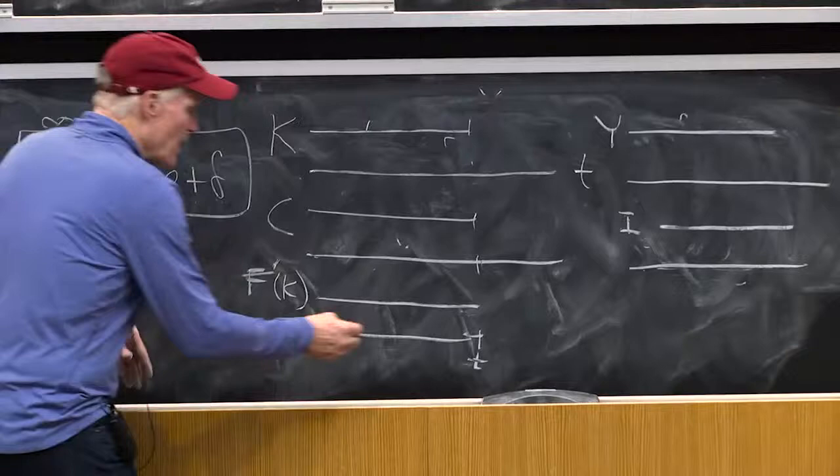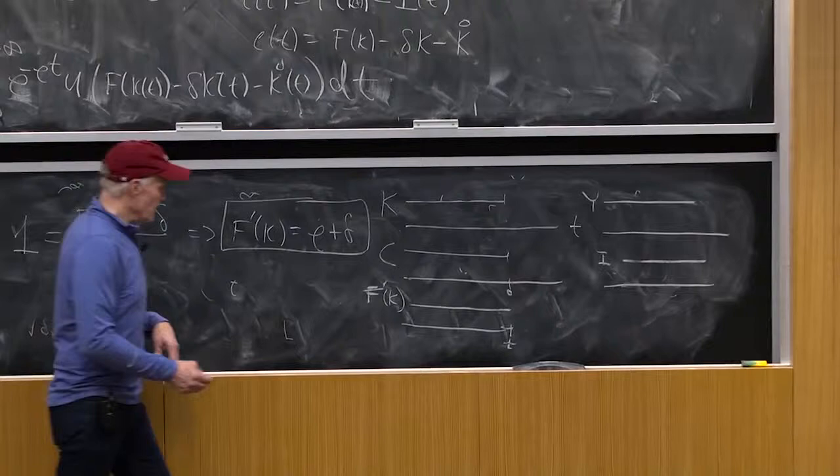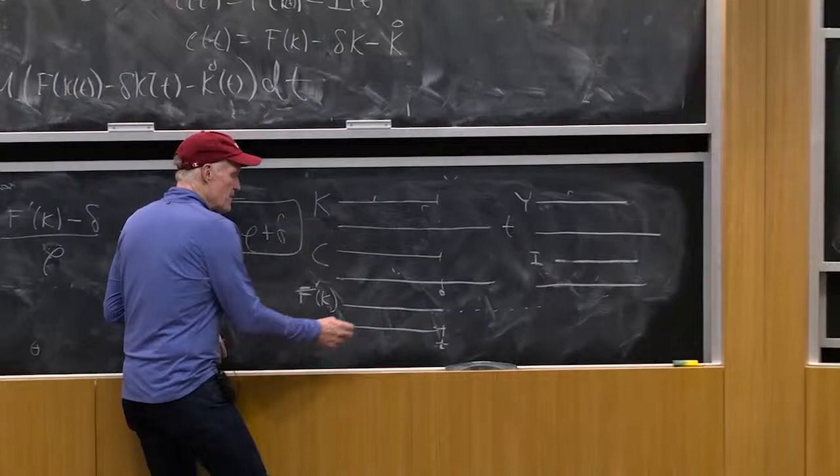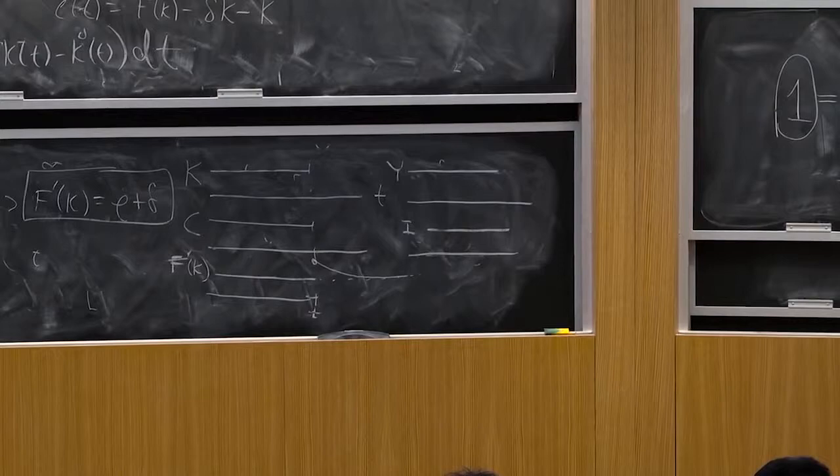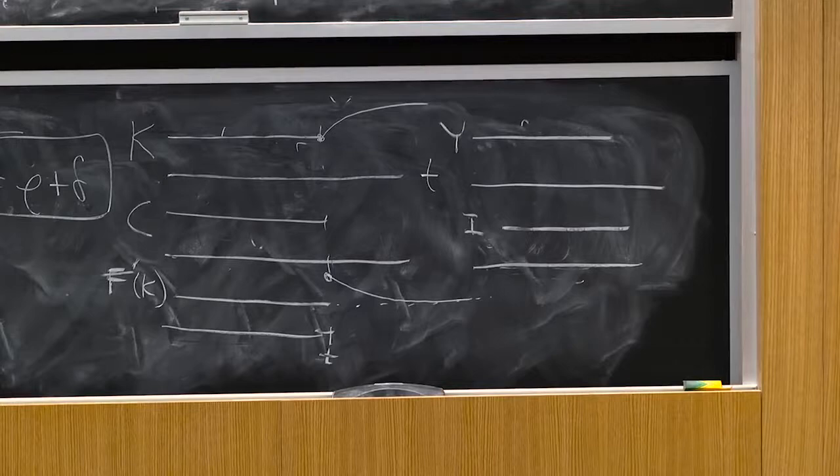And then what would happen over time? Well, where's our new steady state going to be? Well, it's going to be right back where it was. So we would then build up the capital stock and gradually bring f prime back, right? So our k would gradually increase until we reached our new equilibrium. Okay? Everybody agrees with that? That's what would happen.